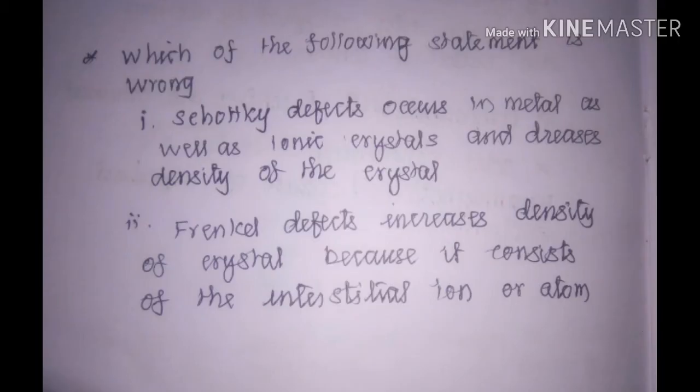Now we will see some questions on defects in solids. The first question asks which statement is wrong. The first statement: Schottky defects occur in metals as well as ionic crystals and decrease the density of the crystal. This statement is correct — Schottky defects occur in both metals and ionic crystals, and because of the two vacant sites for the anion and cation, the density decreases.